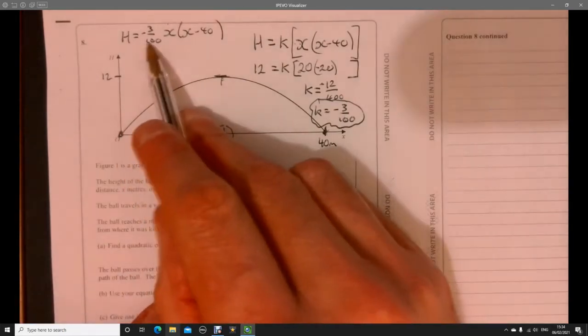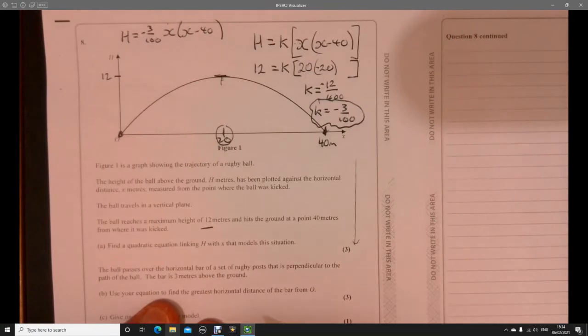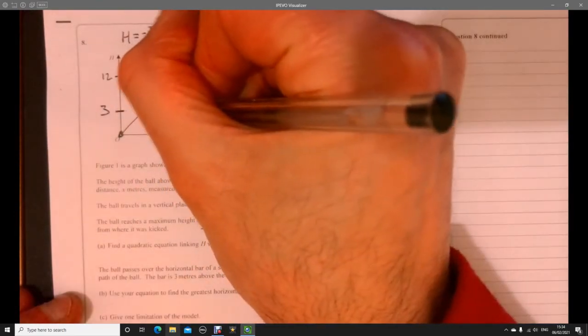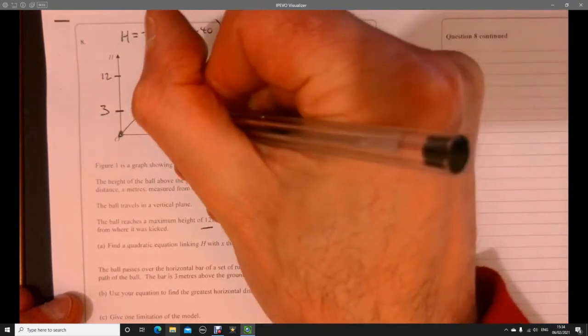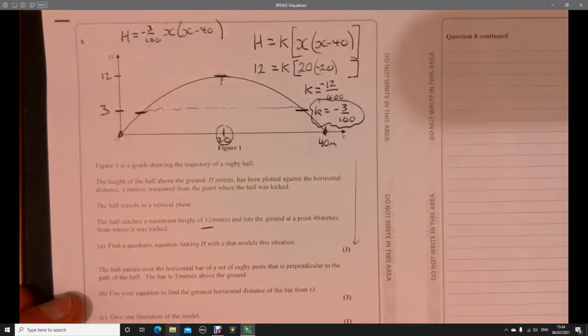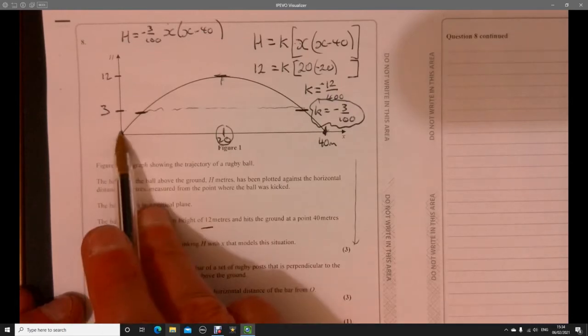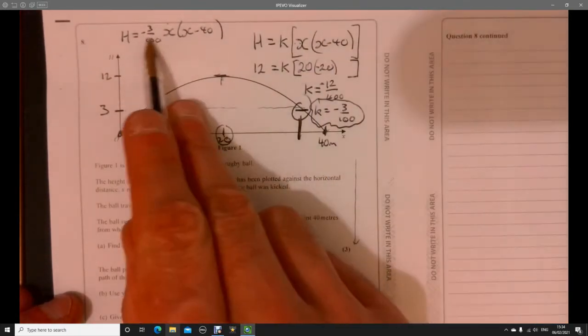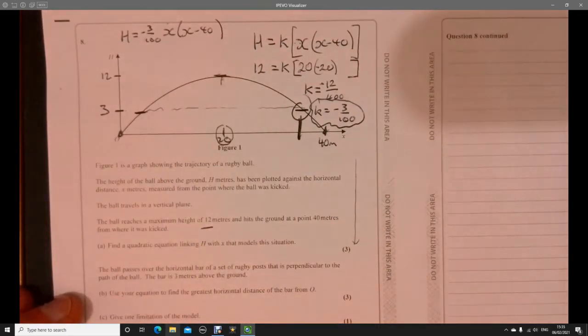So we've got minus 3 over 100. And then that's going to be multiplied by x. And x minus 40. Now, if we were to, we could multiply this out if we wanted to. That's fine as it is, right? That's OK. Kind of depends on what you're going to go and do next, really. So part B down here says, the ball passes over the horizontal bar of a set of rugby posts. That's perpendicular to the bar for the ball. The ball is three metres above the ground. So, sort of three. So the bar is going to be here. It could be anywhere here. And the question says, use your equation to find the greatest horizontal distance of the bar from here. So, in other words, we need to find out this point over here, right? That's what we're just after. So we're just going to say, when is this equal to 3? All right. That's effectively the question.